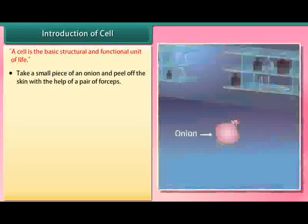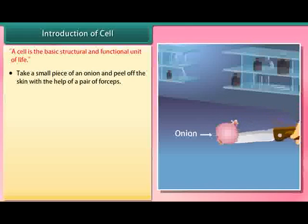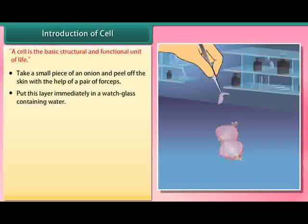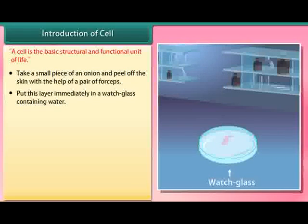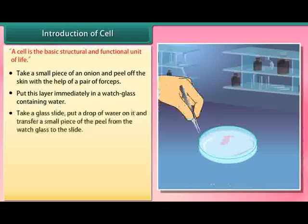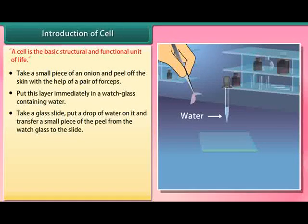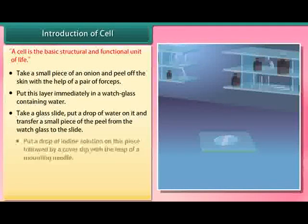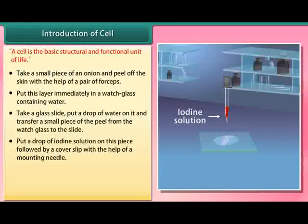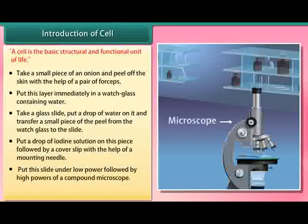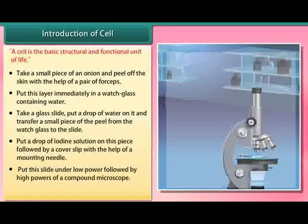Take a small piece of an onion and peel off the skin with the help of a pair of forceps. Put this layer immediately in a watch glass containing water. Take a glass slide, put a drop of water on it, and transfer a small piece of the peel from the watch glass to the slide. Put a drop of iodine solution on this piece, followed by a cover slip with the help of a mounting needle. Put this slide under low power, followed by high powers of a compound microscope.